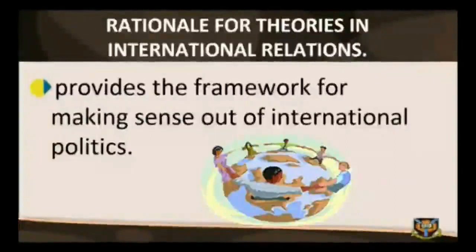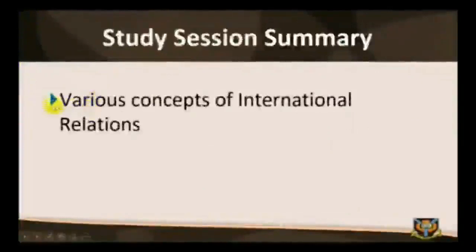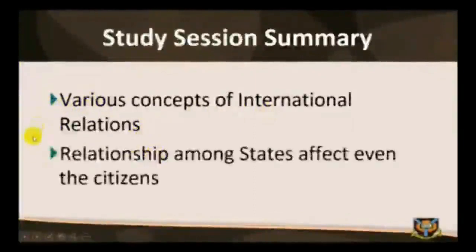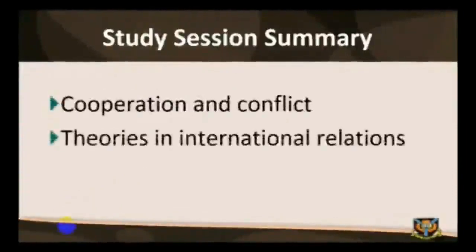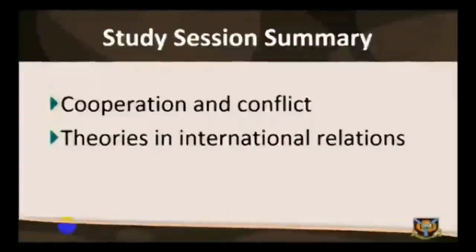Study Session Summary. In this study session, we discussed various concepts of international relations among states and other actors within the international system. We noted that relationships among states and non-state actors affect even the citizens of countries of the world. Interactions in international relations are basically characterized by cooperation and conflicts. Anarchy is the absence of international or global government. We need to study international relations to understand how to manage both war and peace in the international system. Finally, a theory is a proposition or a set of propositions that helps explain why events occur the way they do. Theories are very useful in explaining world events. With this, we come to the end of Study Session 1. Thanks for listening.